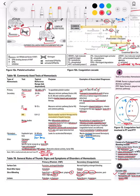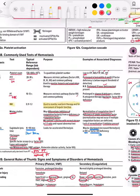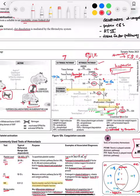Then we have PT, which we measure for extrinsic pathways — 10 to 13 seconds. Factor 7 is involved because in the extrinsic pathway there's literally just one factor, which is factor 7, and also the common pathway including factor 10. This is prolonged in vitamin K deficiency, vitamin K antagonist therapy, warfarin, and factor 7 deficiency. Heparin is on the intrinsic side so we do PTT, but warfarin is on the extrinsic side so we do PT.